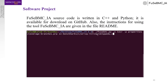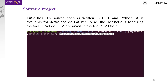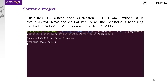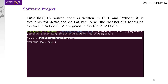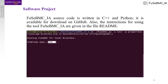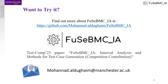FUSI-BMCIA source code is written in C++ and Python. It is available for download on GitHub. The instructions for using the tool are given in the readme file. If you want to find out more about FUSI-BMCIA, please visit the GitHub link shown on this slide. Below is our paper title for further reading. It is also my pleasure to answer any questions regarding our work at the email below.